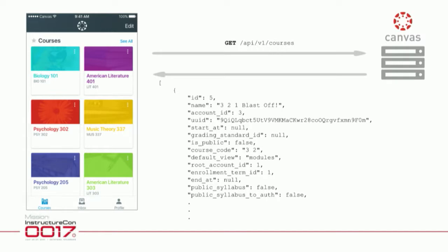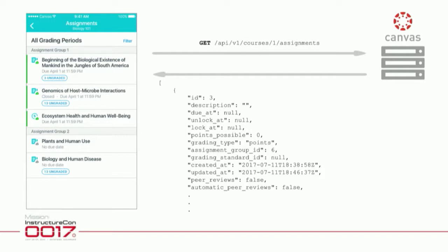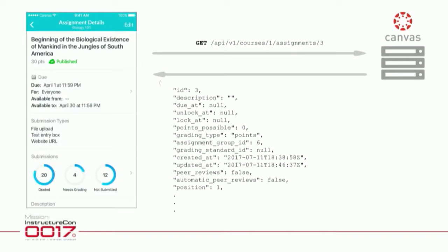JSON data is really just textual information — key-value pairs coming back from the server. With courses being the most frequently accessed resource via the Canvas API, the initial view in Canvas Teacher is a view of the courses the teacher is enrolled in. The teacher would pick a course, and then Canvas Teacher makes another request to get all the assignments for that course. It also organizes things according to assignment groups, so you'd have to make another API request to render that view. Once the teacher has a list of assignments, they choose one they want to grade, and that requires another API request to get back the details for that assignment.